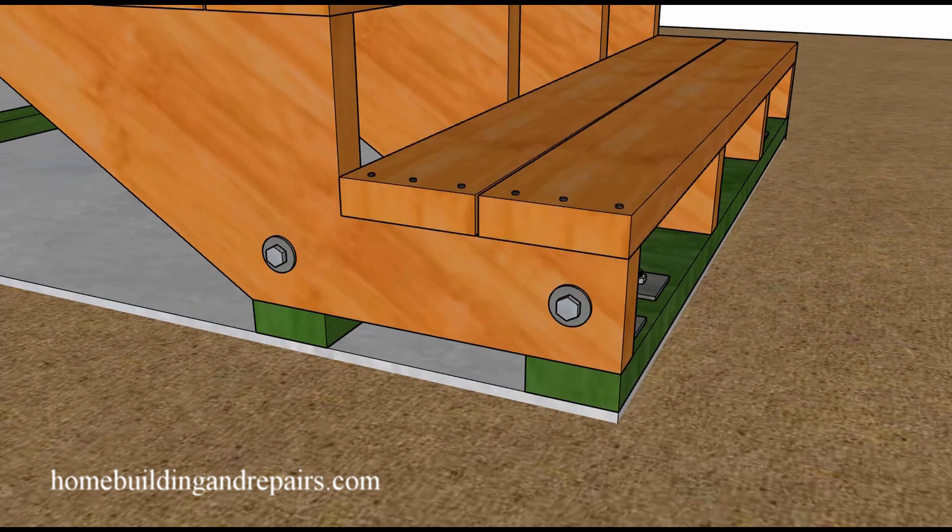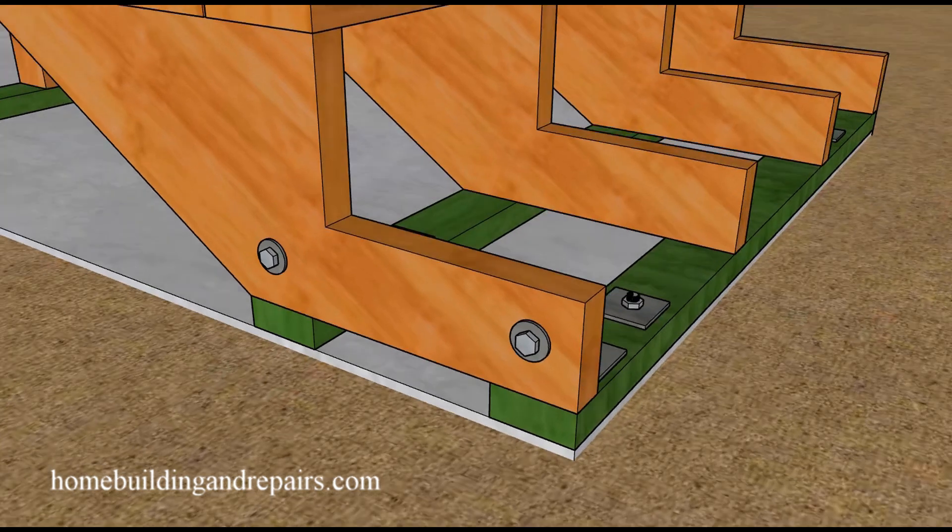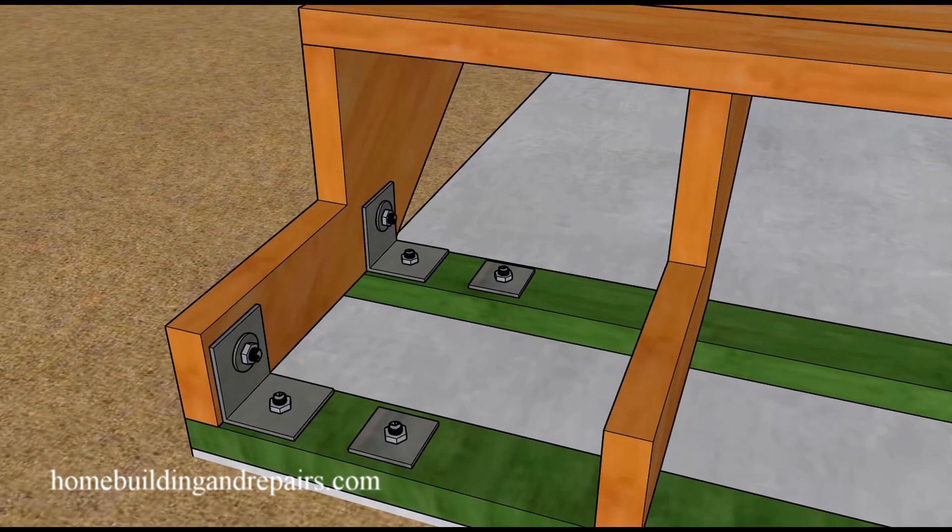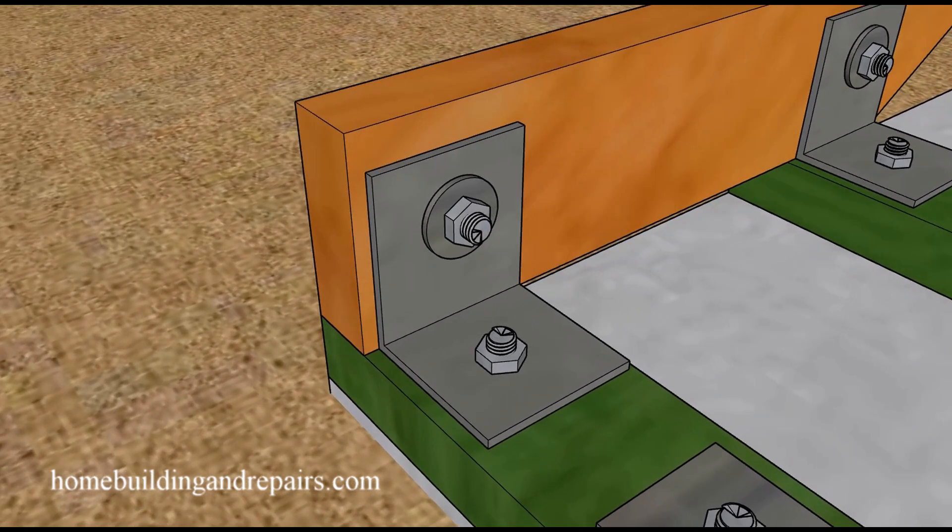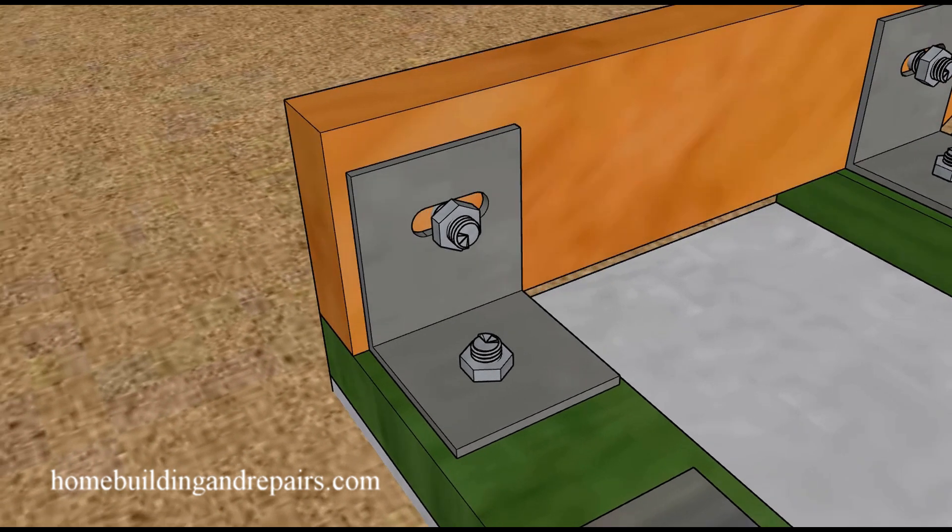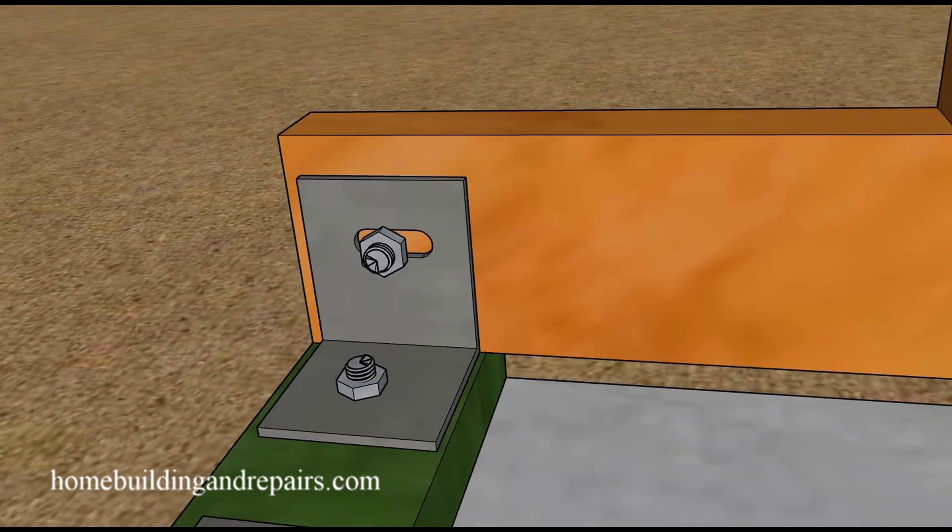This second suggestion might require more work. We're going to separate the stringers from the framing plates—not permanently attach them with nails or screws—so they can move. This uses the same principle: we'll have some type of slot cut into a metal bracket that allows the stairs to move if needed.